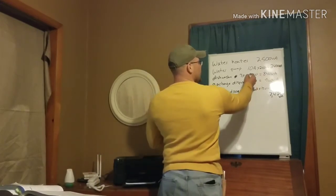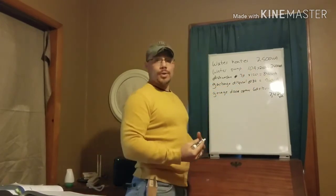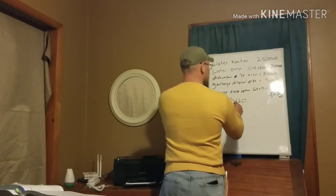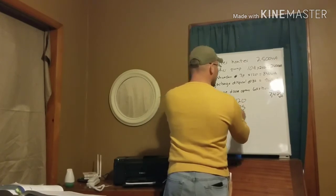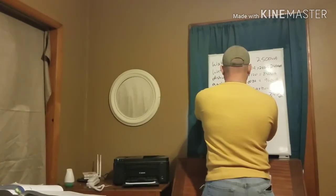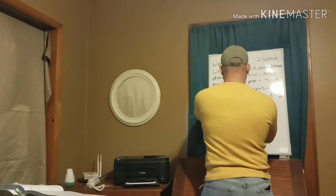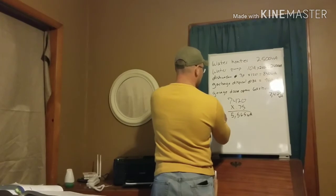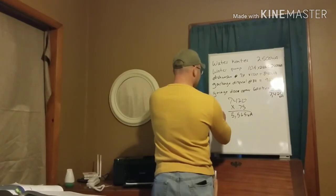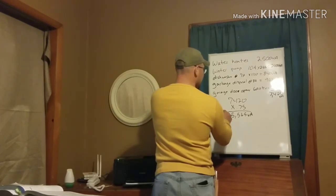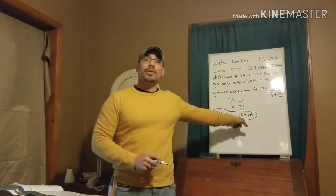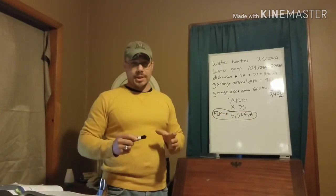That's our total for all fastened-in-place appliances. We have five appliances, so that's four or more, meaning we can apply the 75 percent demand factor. We take 7,420 VA times 0.75 and we get 5,565 VA. That is our fastened-in-place appliance load — the number we would use in our calculations for our ungrounded service conductors.